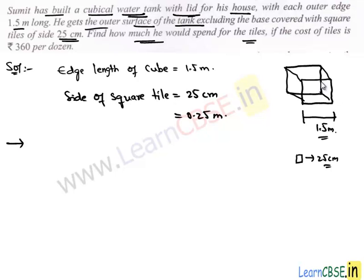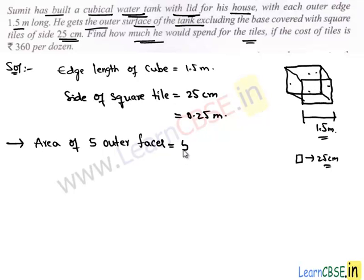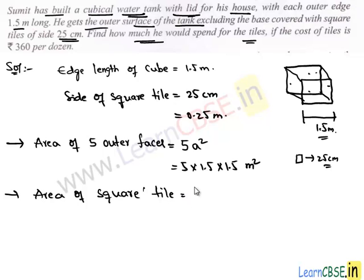Let's find out the area of this cube. Note that we have to find the area excluding the base, because Sumit is not covering the base with square tiles. We have to find the area of 5 surfaces. The area of each face is a square, and we have 5 such faces: 5 × 1.5 × 1.5 square meters. The area of one square tile with side 0.25 meters is 0.25 × 0.25.